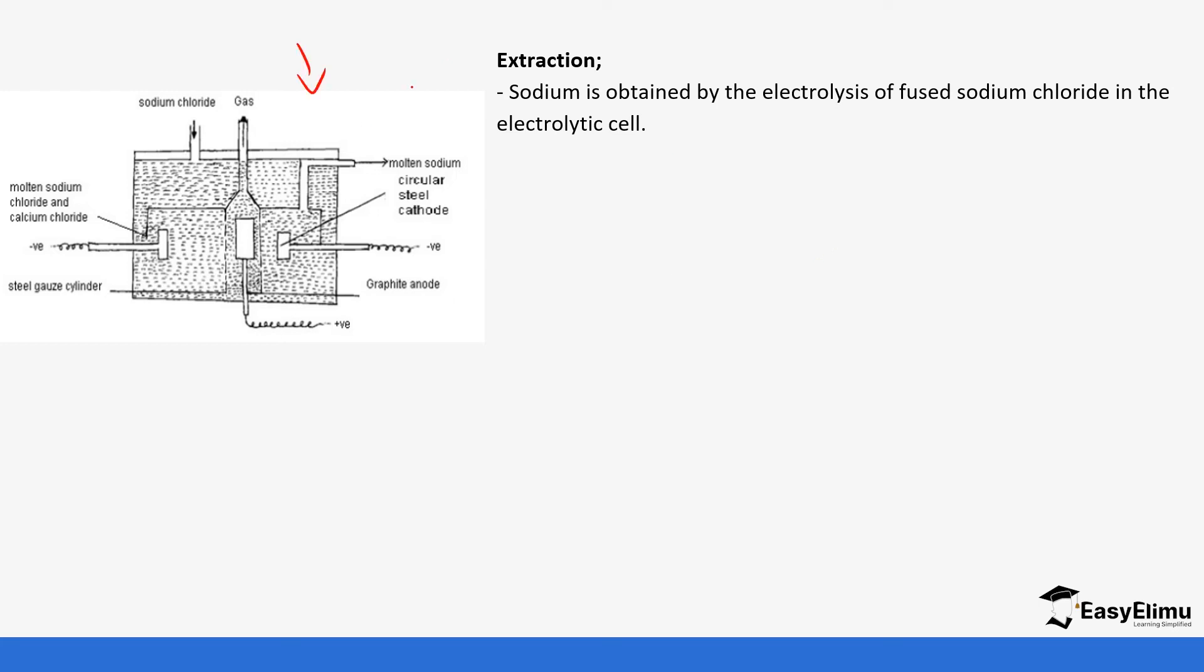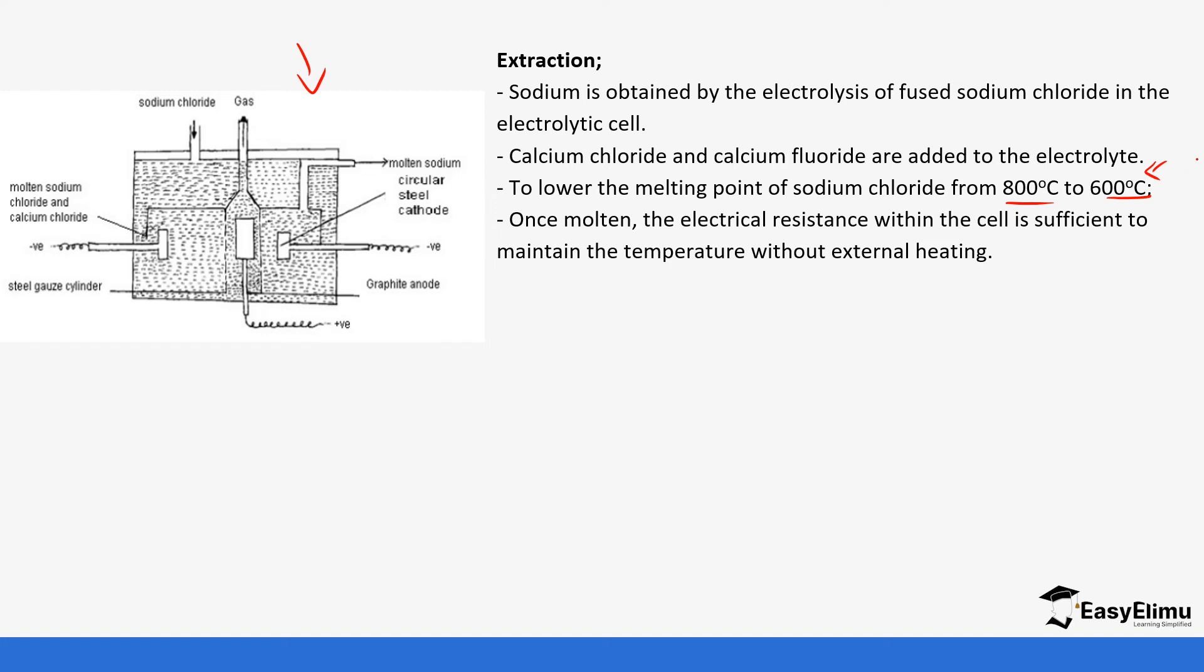This is the electrolytic cell as you can see. Calcium chloride and calcium fluoride are usually added to the electrolyte. These lower the melting point of sodium chloride from 800 to 600 degrees Celsius. It's important to remember these temperatures because you have to be very specific when giving your responses in the exam. Once molten, the electrical resistance within the cell is sufficient to maintain the temperature without external heating.